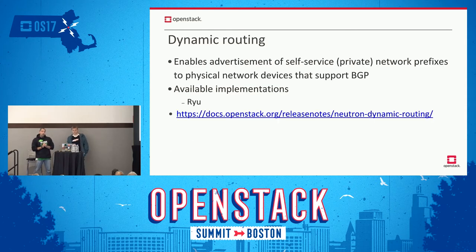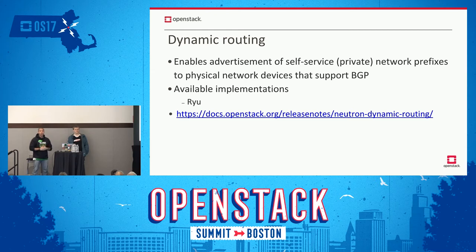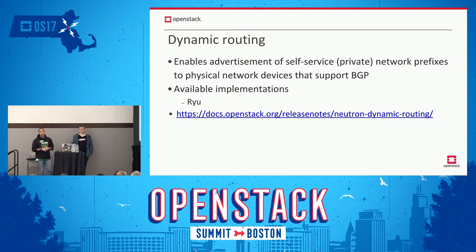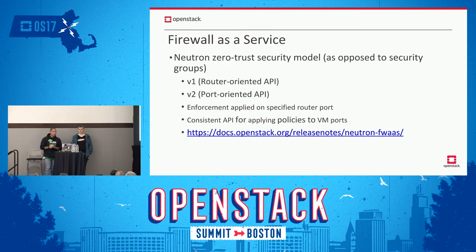Dynamic routing came about as a way to overcome the limitations of static routes. It's all well and good to come up with your tenant private networks, but what if you want to integrate with the rest of your data center? Dynamic routing came to realization in order to enable advertisement of these private networks by means of BGP. At this point in time, we have BIRD as one of the implementations.